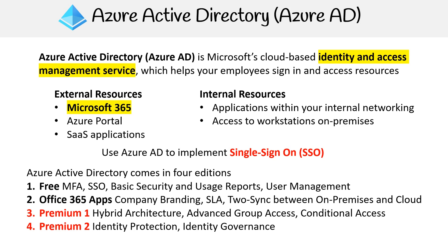For Premium Two, you have identity protection and identity governance. As we move up the tier, each tier includes all the features of the prior one, so Premium Two has all the features of Premium One.